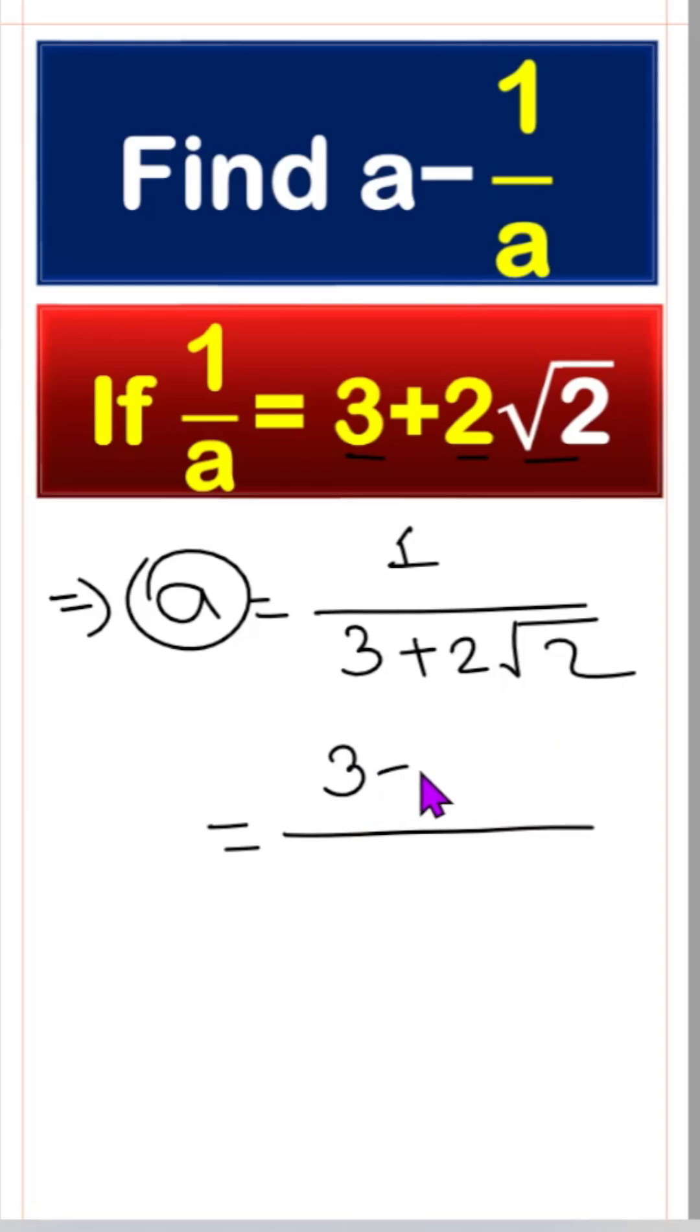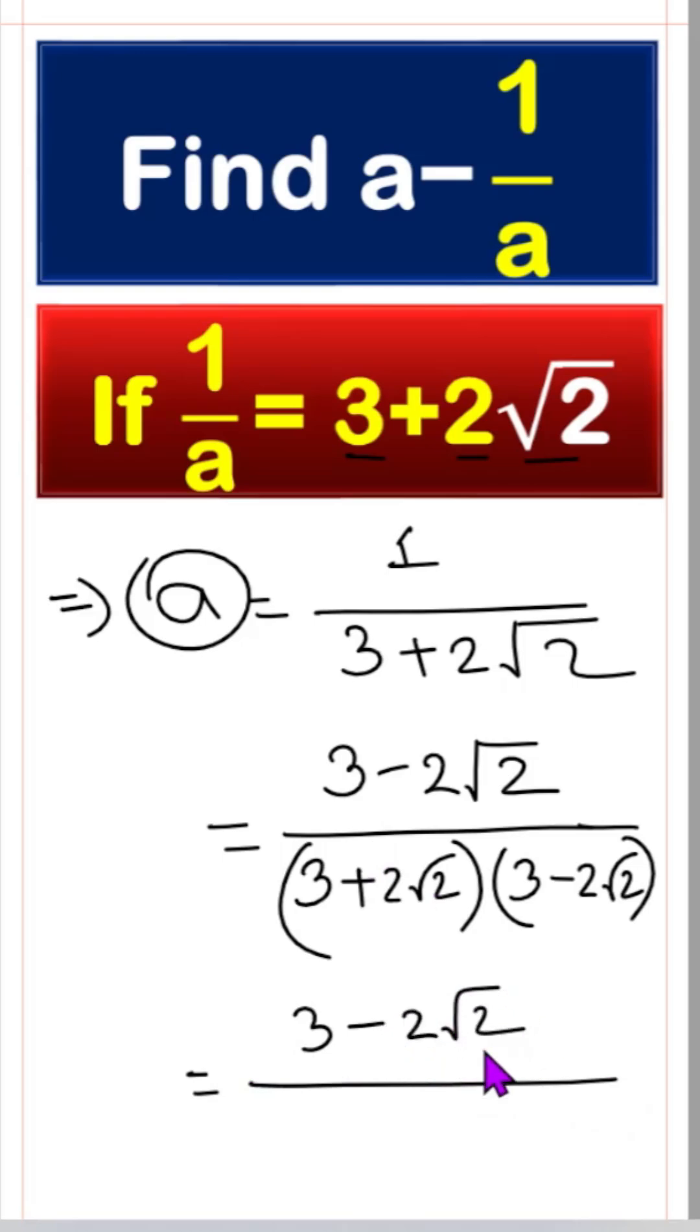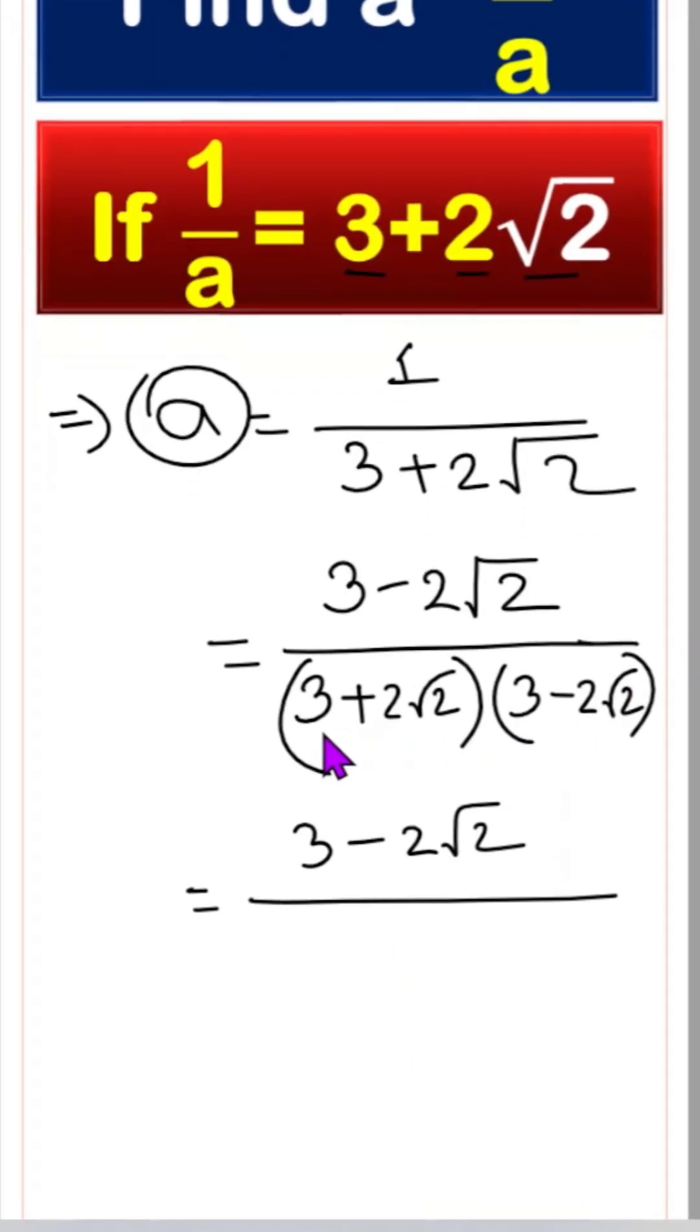So we can write 3 minus 2 root 2, and here is 3 plus 2 root 2 times 3 minus 2 root 2. It's a conjugate number. So 3 minus 2 root 2, and here in the denominator it's looking a plus b times a minus b. So 3 squared minus 2 root 2 squared.